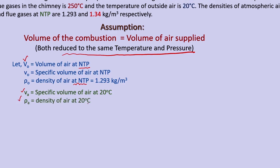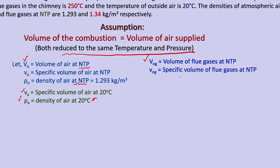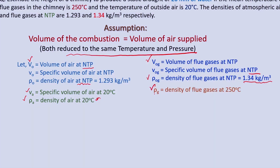Similarly, small v_A is the specific volume of air at 20°C, and ρ_A is the density of air at 20°C (atmospheric temperature). Capital V₀_G is the total volume of flue gases at NTP, small v₀_G is the specific volume of flue gases at NTP, and ρ₀_G is the density of flue gases at NTP equal to 1.34 kg/m³. ρ_G is the density of flue gases at 250°C, and small v_G is the specific volume of flue gases at 250°C.